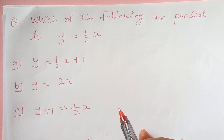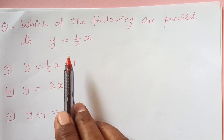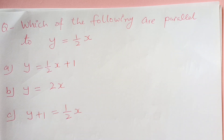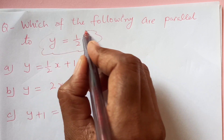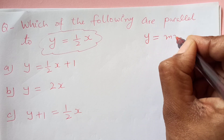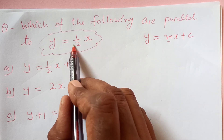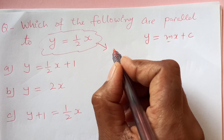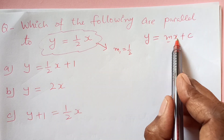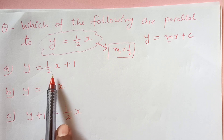Let us try to understand this from the examples. Which of the following are parallel to y equals half x? We have this line given to us. The equation in y-intercept form is y equals Mx plus C. From here, this is Mx, so C is 0. The gradient of this line, M1, is half. Now let us see what is the gradient of another line here.